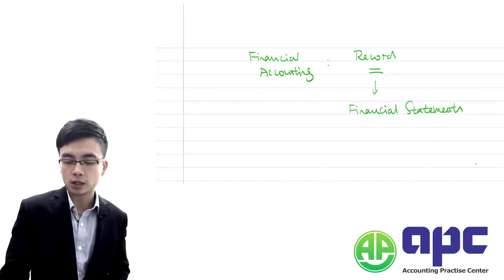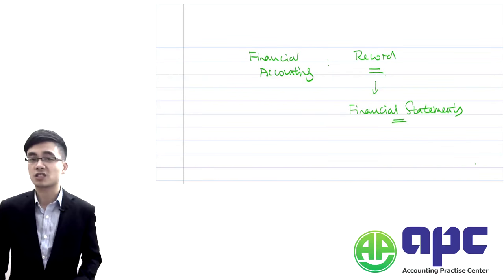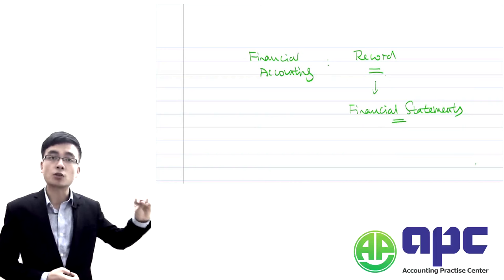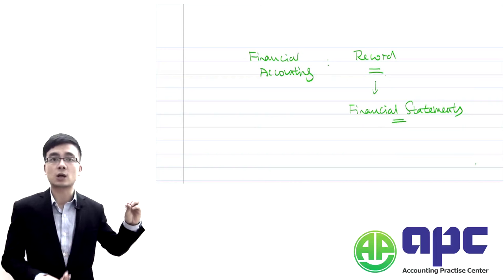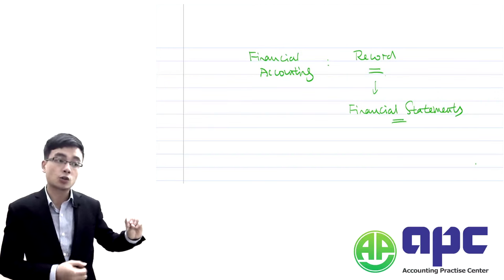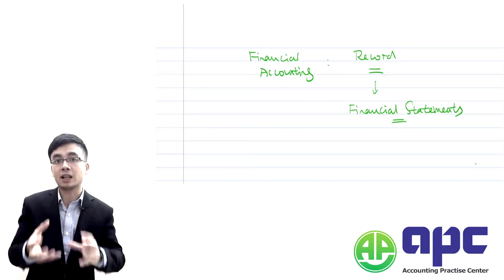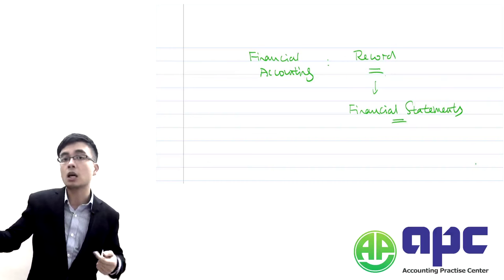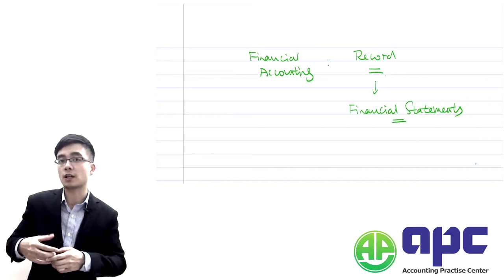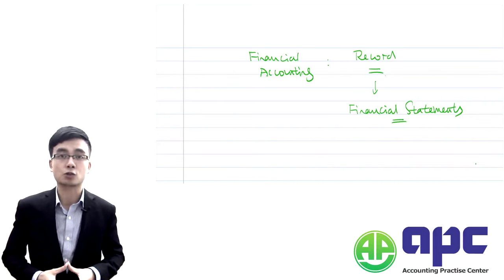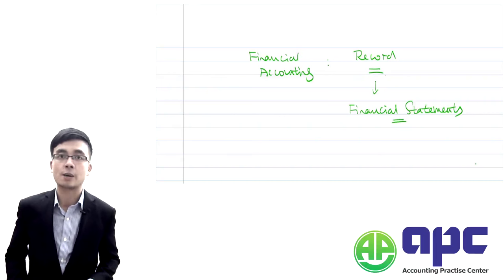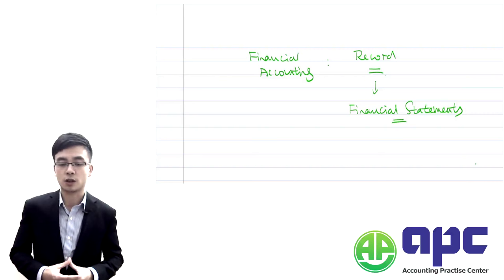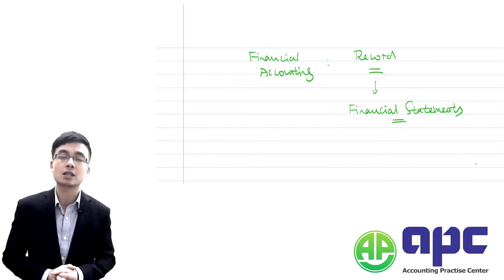In our F3, we know we go through a series of steps when preparing financial statements. We get source documents such as invoices and post them into books of prime entry, like the sales day book and purchase day book. We then post the totals into the ledger accounts — the T accounts — and end up with closing balances that go into a trial balance, with year-end adjustments like depreciation. Finally, we prepare our financial statements: the balance sheet (statement of financial position), statement of profit or loss and other comprehensive income, statement of changes in equity, and the cash flow.